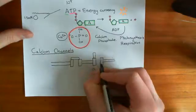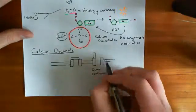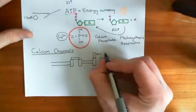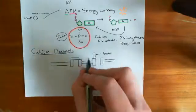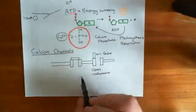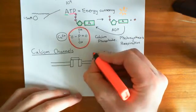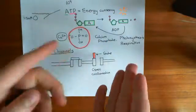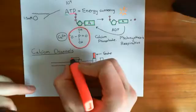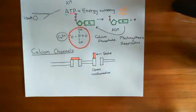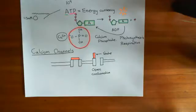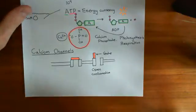This portion of the channel which changes in conformation to lead to the channel opening is known as the gate. I've made it look as though it really is like a gate — like a garden gate. In reality, these gates can be very complicated structures. The cartoon does demonstrate the principle of the gate: the gate changes conformation and has a conformation where it will block calcium ions from moving through the channel, and another conformation where it will allow calcium ions to move through the channel.